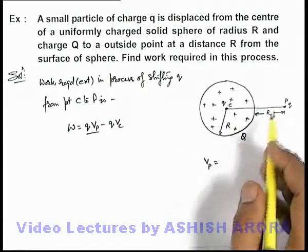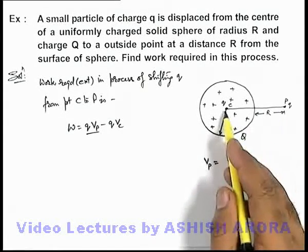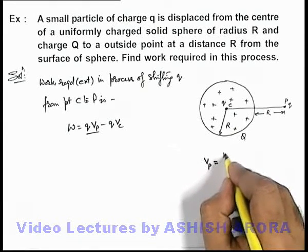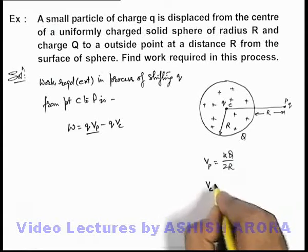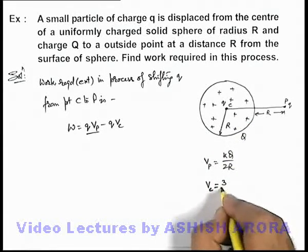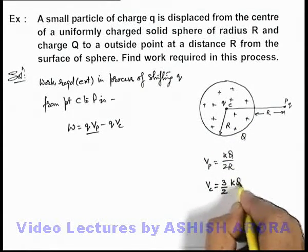Here V_P and V_C are the potentials at points P and C. At point P, which is situated at a distance 2R from the centre, the potential is kQ/2R. The potential at the centre of a uniformly charged sphere is 3kQ/2R, which we studied in the previous section.